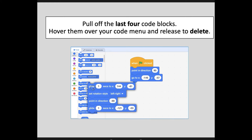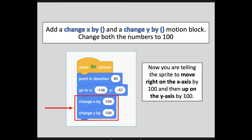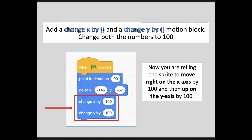We're going to try something a little different. Your code now should look like this: when the flag is clicked, point 90 degrees and start in this position. Now add a change X by and a change Y by motion block, and change both of those numbers to 100. The idea is we're telling the sprite to move right on the X axis by 100 and then up on the Y axis by 100 — a different way to make sprites move around that I want you to be familiar with.